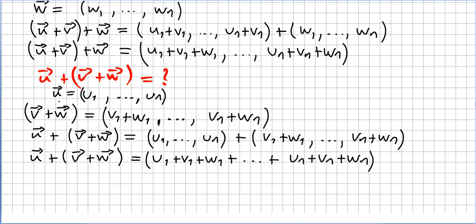Well, u is the vector u1, u2, ..., un. v plus w is the vector v1 plus w1, ..., vn plus wn. It's the component addition.